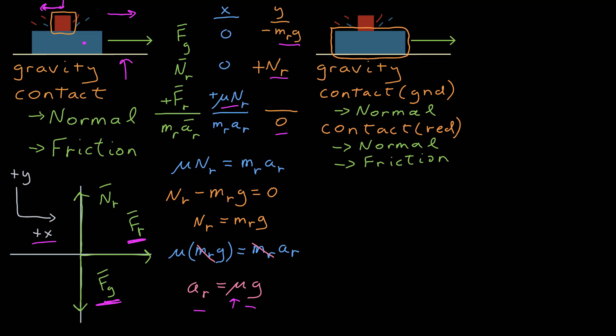So next is a free body diagram, where I've already put in my coordinate system — I want it the same as before. There's a force due to gravity on blue, which is down.